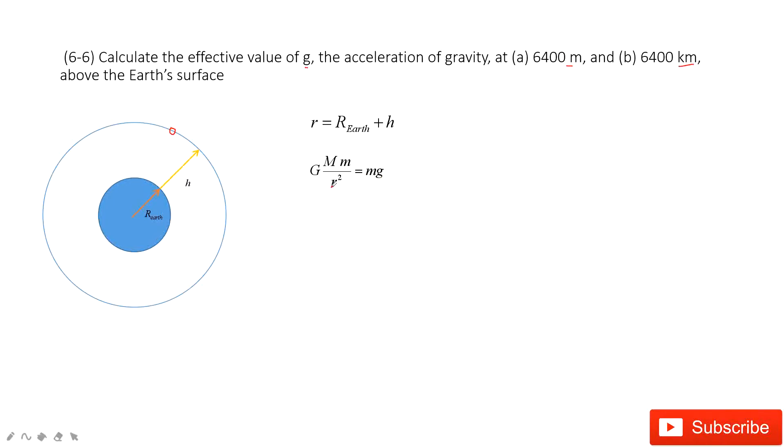This r becomes the radius of the Earth plus the distance above the surface of Earth. In this way, we can get g equal to capital G, the constant, times the mass of the Earth divided by r squared.